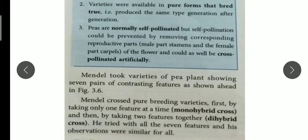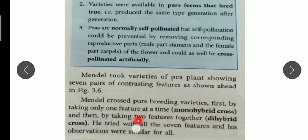He conducted two crosses. The first cross is called monohybrid cross, in which he used only one character or feature. The next cross is the dihybrid cross, in which he used two characters. Let us see how he performed it and what observations he found.